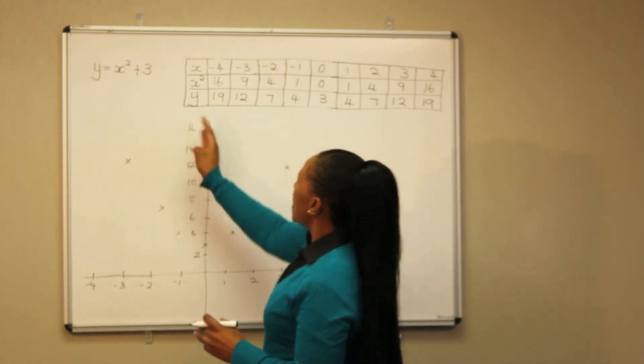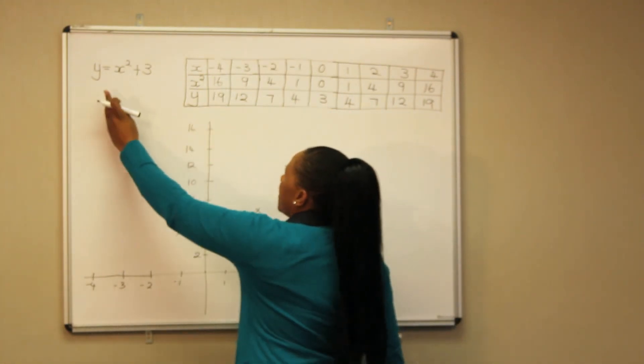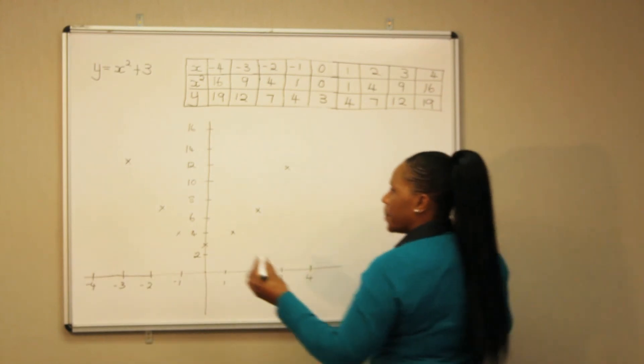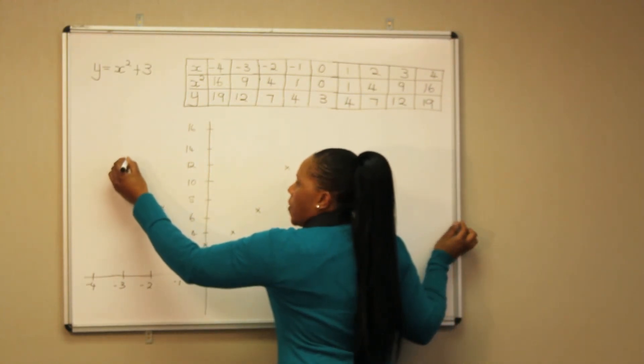So if we had all numbers on the number line, we would have our minus 4 and 19 up there. So we are going to draw our graph.